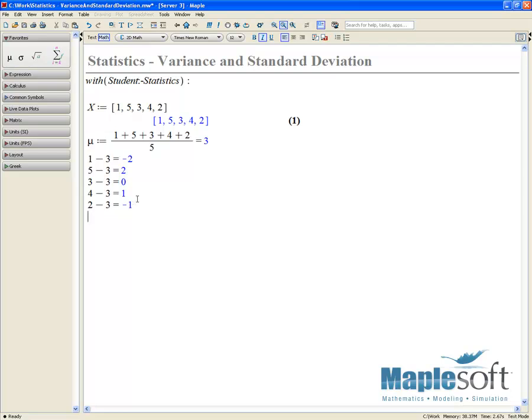So if we try to generalize this, I'm going to come down here and call total variance equal to the sum over all the values, from one to five.